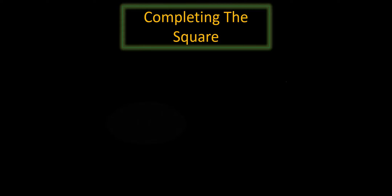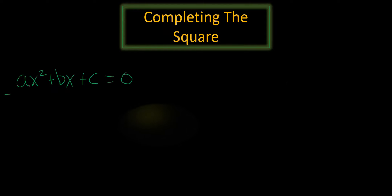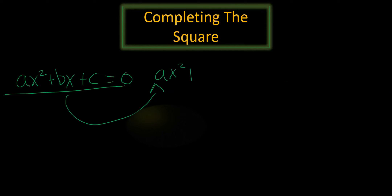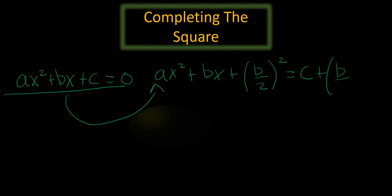In this lecture, I want to talk about completing the square. If you have a general quadratic equation that looks like ax² + bx + c = 0, we can rewrite it so it looks like ax² + bx + (b/2)² = c + (b/2)². The goal is to make a perfect square trinomial on the left-hand side.